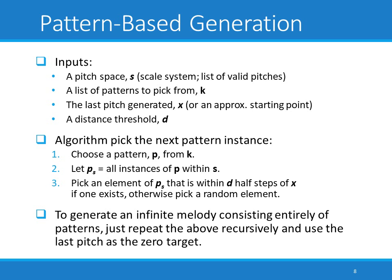When finding the next pattern instance, we first choose a pattern P from our set K, and let P_S be all instances of P within the pitch space S. Then we look for one particular instance in P_S that is within D half steps of X, our last generated pitch. Sometimes you might back yourself into a corner and have no option within D half steps of X, in which case you simply pick randomly. Given an approximate starting point, we can call this process recursively and generate an infinite melody consisting entirely of patterns.